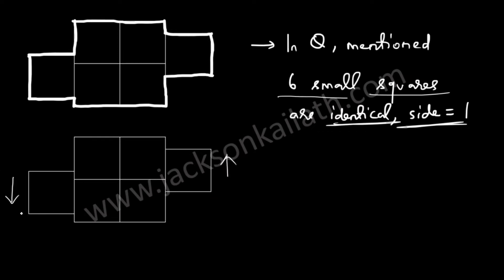If I take this side to here, this side over here will come over here, because these two are identical. All these six squares are identical. You can see the same thing happening over here.